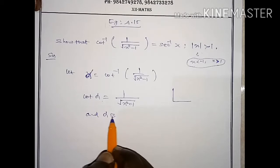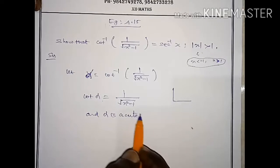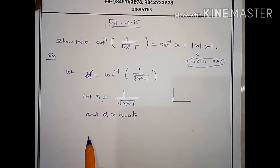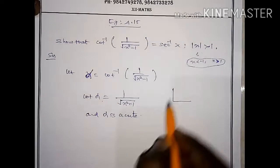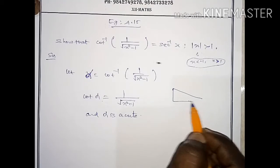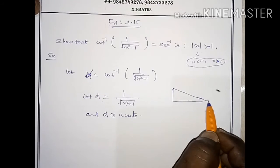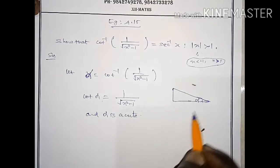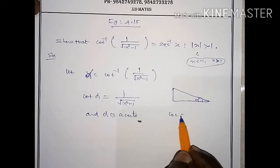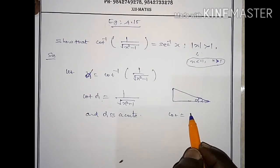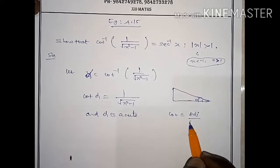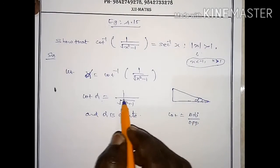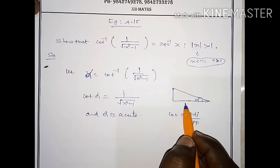Alpha is acute. We consider a right angle triangle where alpha is the angle. The cotangent formula gives us adjacent side by opposite side, and here the adjacent side is 1.